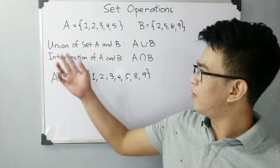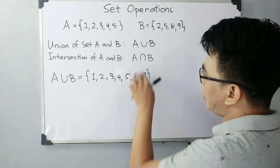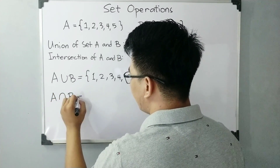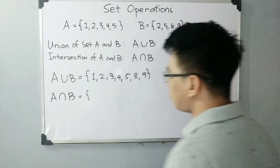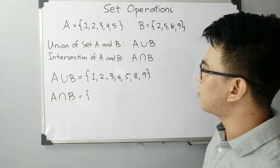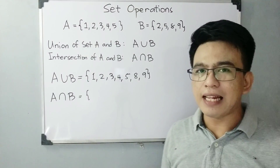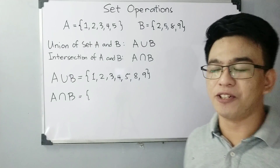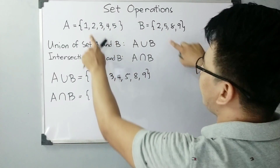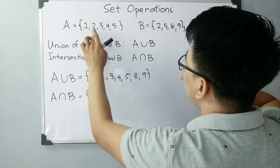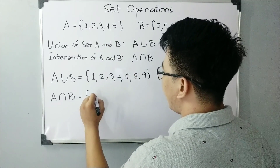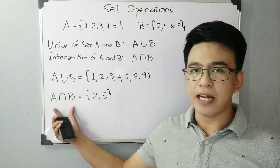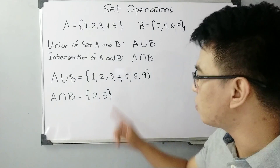Now let's move on to the intersection of A and B. For the intersection of set A and set B, it is very simple. When we say the intersection of set A and set B, we look at what is common between the two sets — those will be the elements of A intersection B. As you saw, the common elements are 2 and 5. So the intersection of set A and set B is {2, 5}, and the cardinality of A intersection B is simply 2.